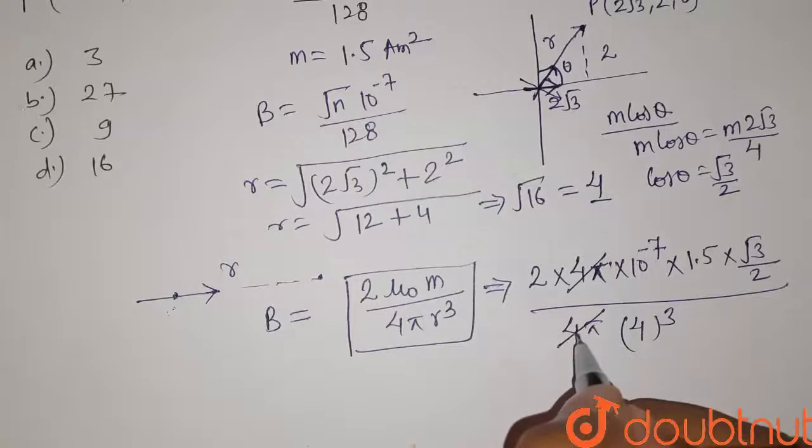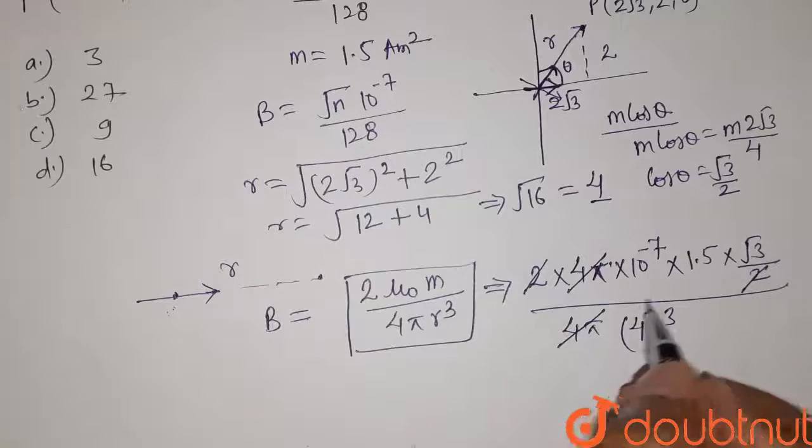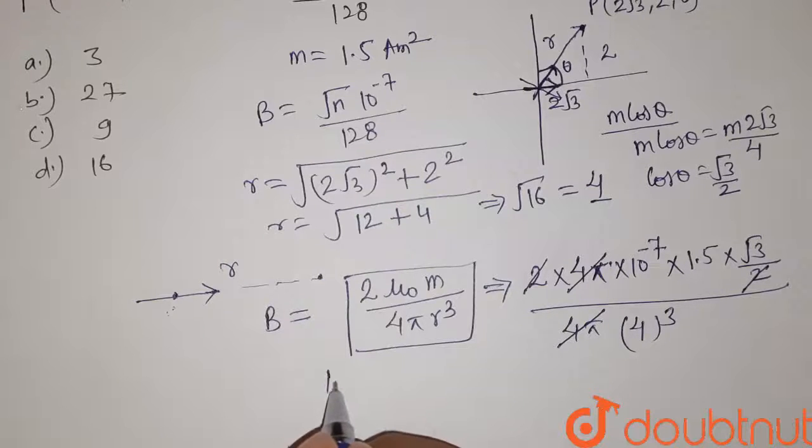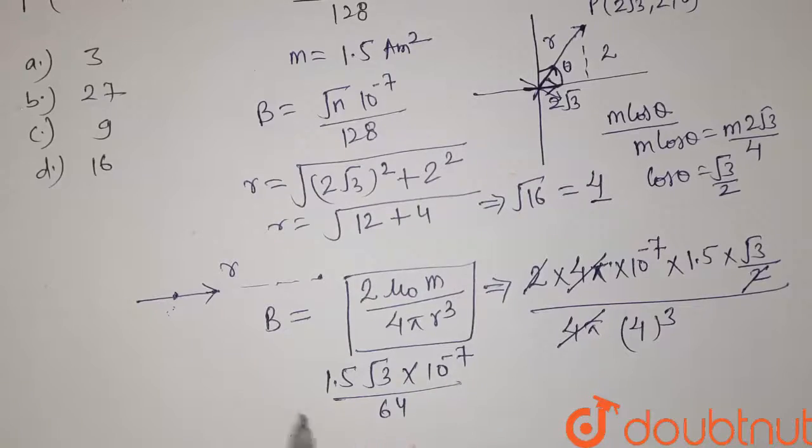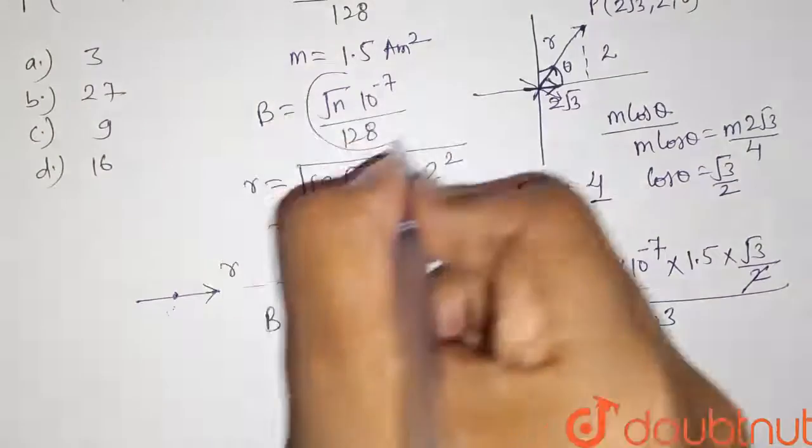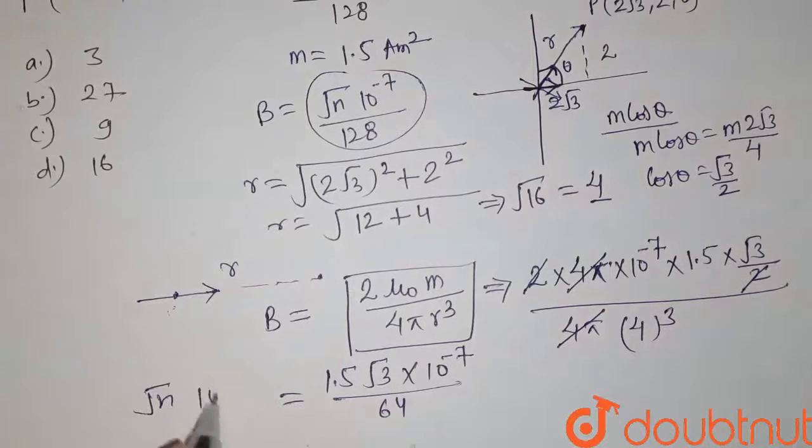So 4π and 4π will get cancelled out, this 2 and this 2 will get cancelled out, and we have 1.5√3 × 10⁻⁷ divided by 4³ is 64. Now the value of B is given equals to √n × 10⁻⁷ divided by 128.